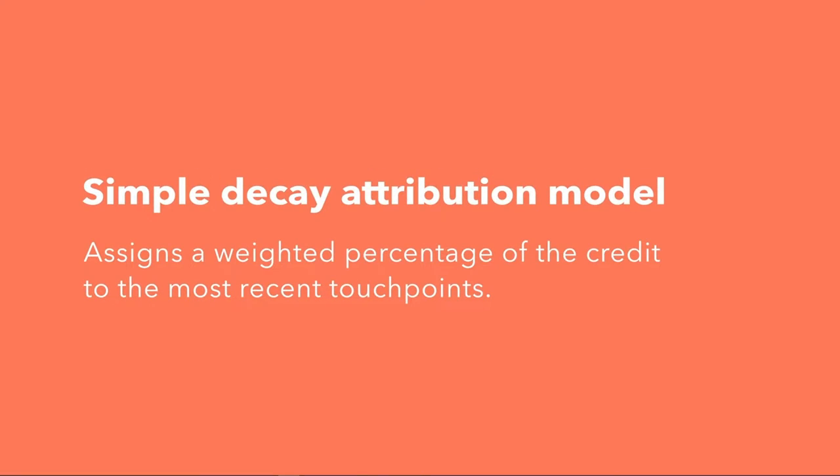A simple decay attribution model assigns a weighted percentage of the credit to the most recent touchpoints. I recommend using this model if your buying cycle is short, because it assumes that the touchpoints closer to the purchase decision greatly influence the decision to purchase.